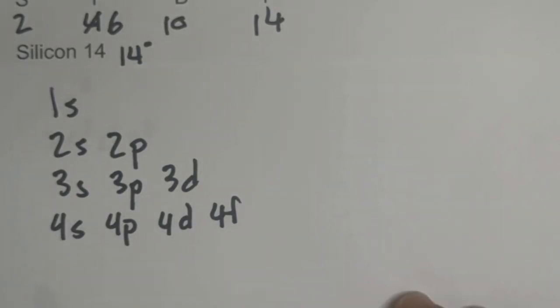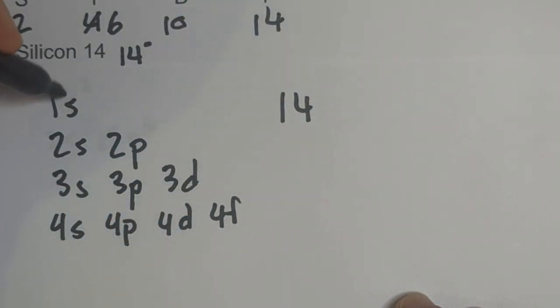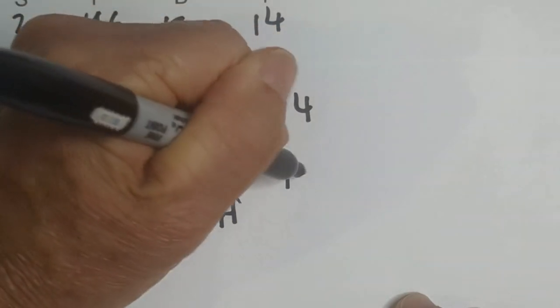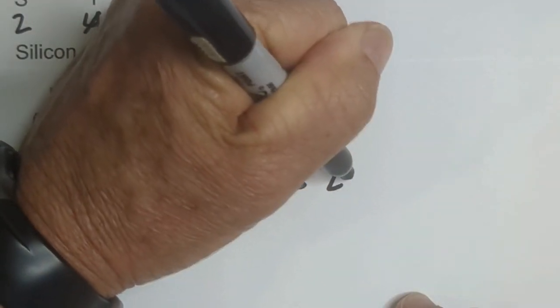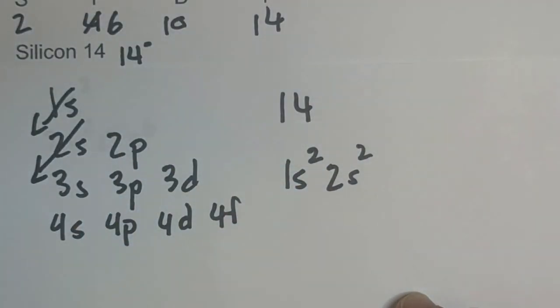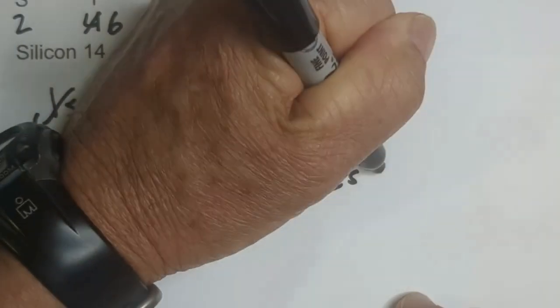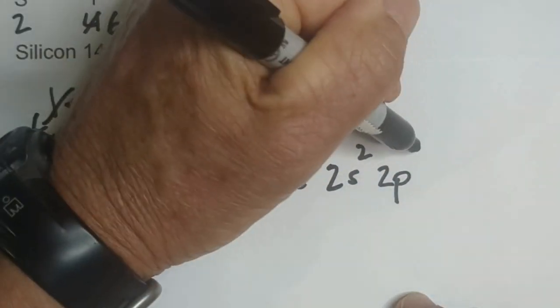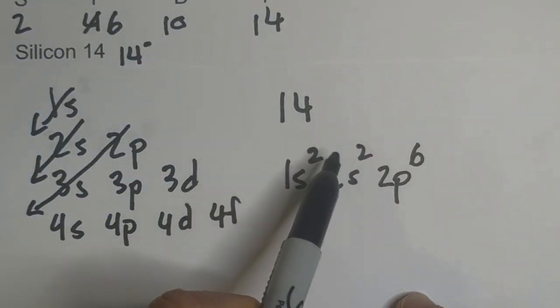I just paused and rewrote it neatly. Remember we're getting to 14. So we're going to go 1s, remember s holds 2. Then we're going to go to 2s², we're up to 4. Then we're going to go to 2p, and we can go to 6 because we have plenty. We only are at 4, so we have 10 left.